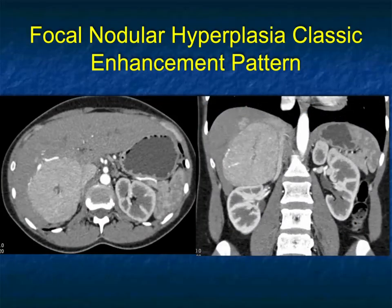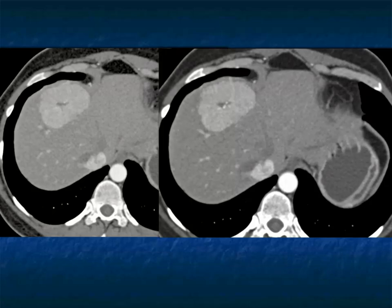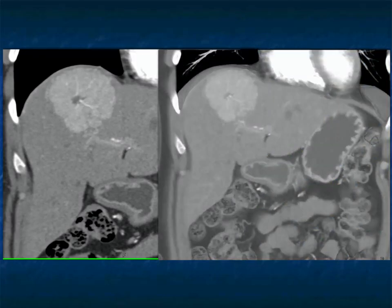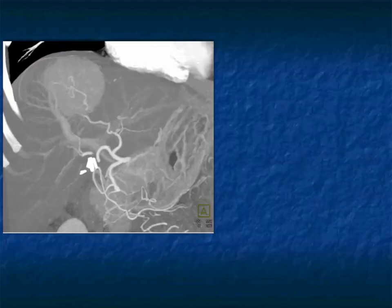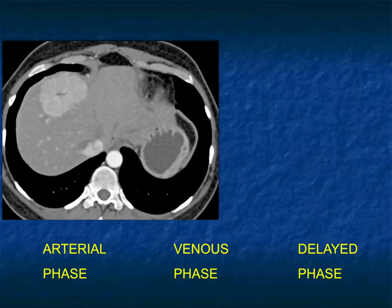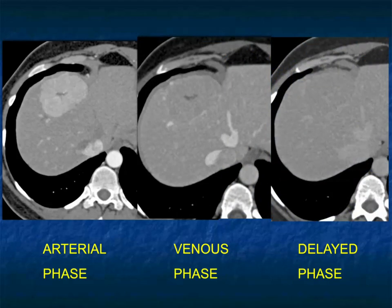There's probably a second lesion present — we typically think about FNH as solitary, but it can be multiple. Here's another lesion: central scar, homogeneous enhancement, as bright as the IVC but not the aorta, with the central vessel going into the scar. MIP is nicely showing that. The lesion quickly becomes nearly isodense, though you can still see the central scar. Putting those images together — arterial to venous to delayed — it's not perfectly isodense but nearly so, that central scar is nearly totally filled in. The brightness and homogeneity are very similar to the patient's IVC. Classic FNH.